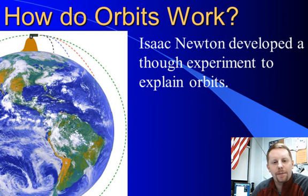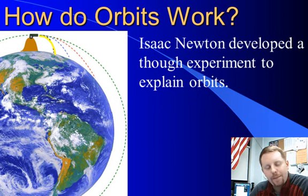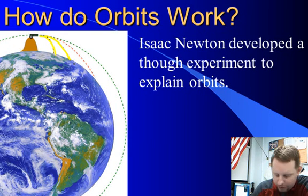If we put a cannon on top of this mountain that is above the surface of the earth and above the atmosphere and we were to shoot a cannon from it, it would travel for some distance in a parabolic path before returning to the earth. If we shot it with a little bit more velocity, it will go a little bit further before returning to earth.